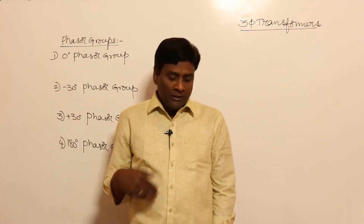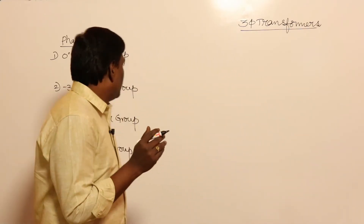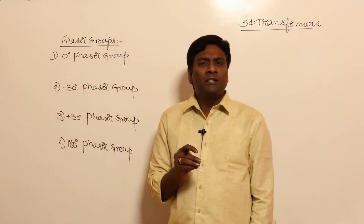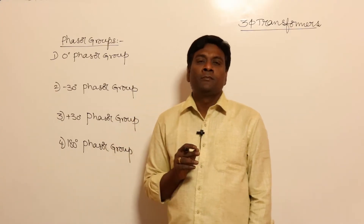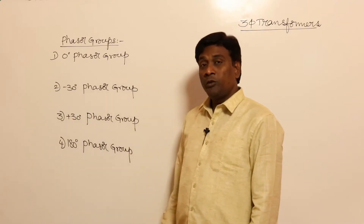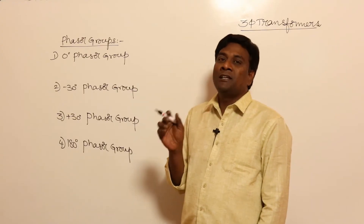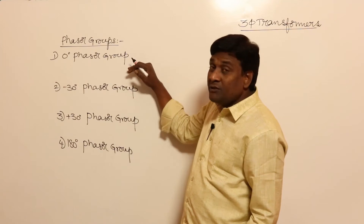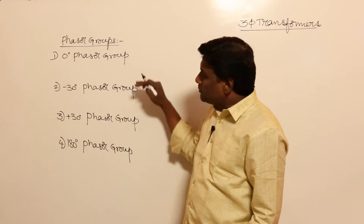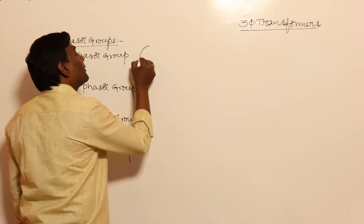In this session, let us see what are meant by phasor groups. There are four phasor groups — many say more like 138 degrees, 210 degrees phasor groups, but they will not be there. So there are four types of phasor groups, divided by the phase displacement between HV line EMF and LV line EMF — which can be 0, minus 30, plus 30, or 180 degrees.